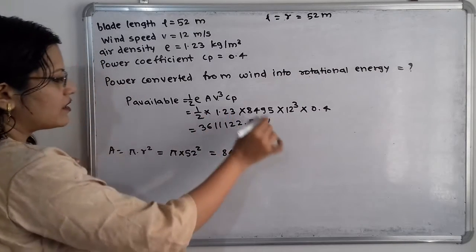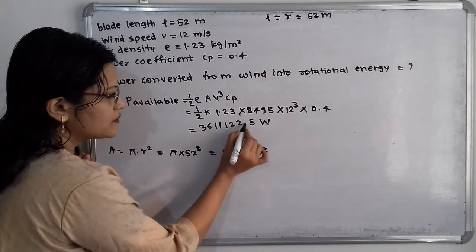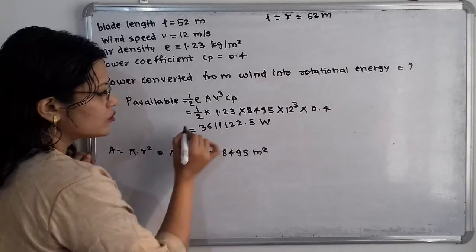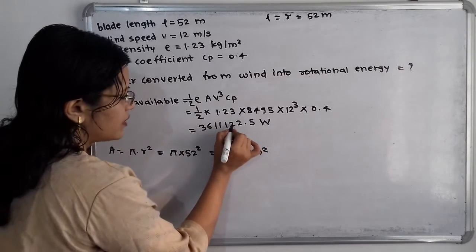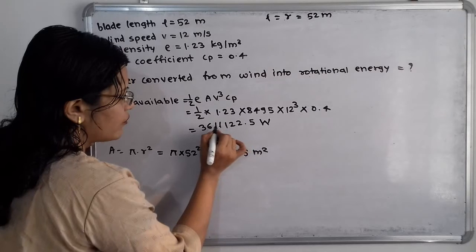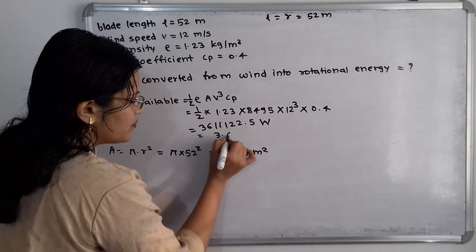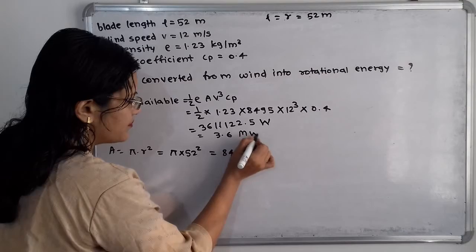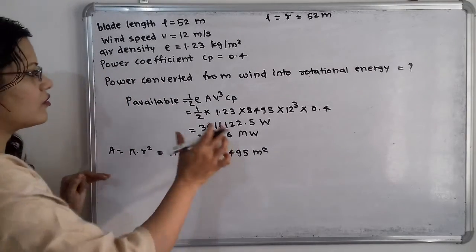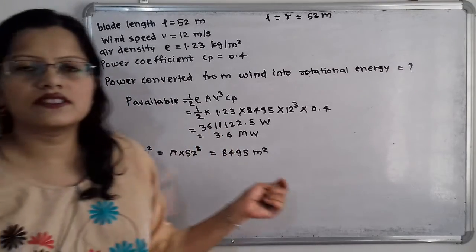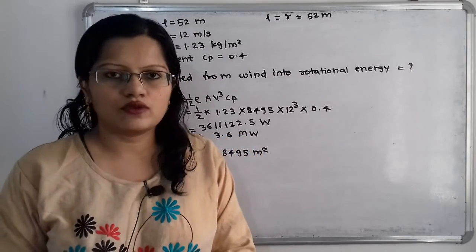We convert this to megawatts by moving the decimal point 6 digits to the left, which gives 3.6 megawatts. This is the P available, or the power extracted from the rotor.